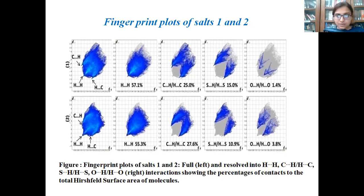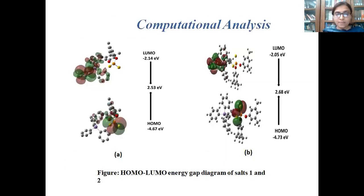Hirshfeld surface analysis provides a quantitative way to study the non-covalent interactions present in the molecules. Then, coming to the computational analysis of the salts — the computational analysis is a completely theoretical study based on electron density, which is used to determine the stability of the salts.